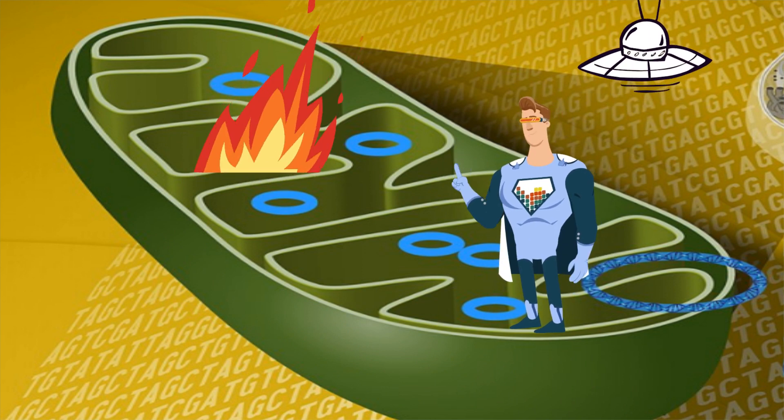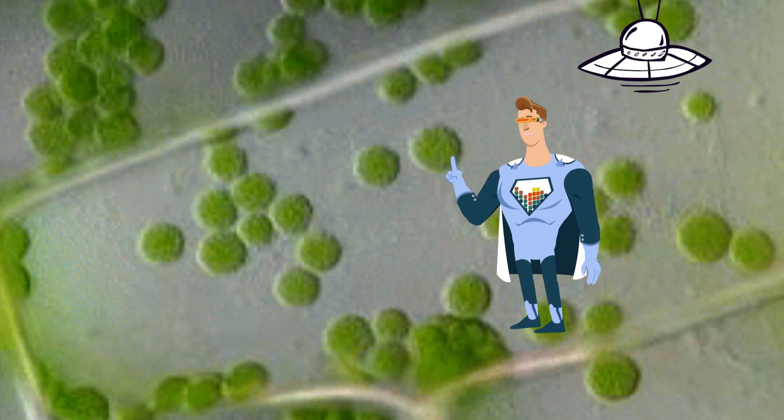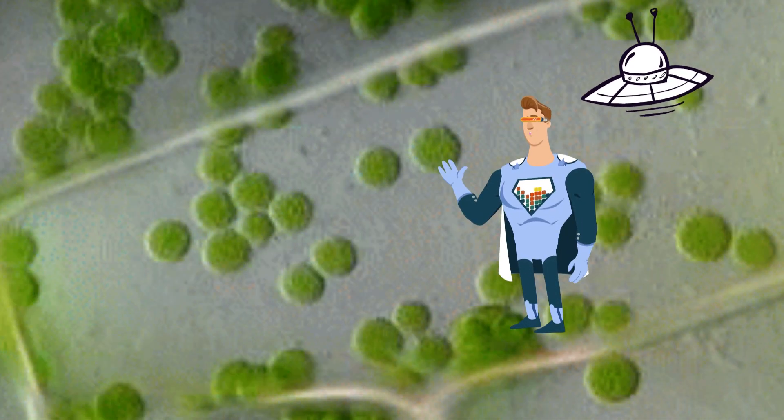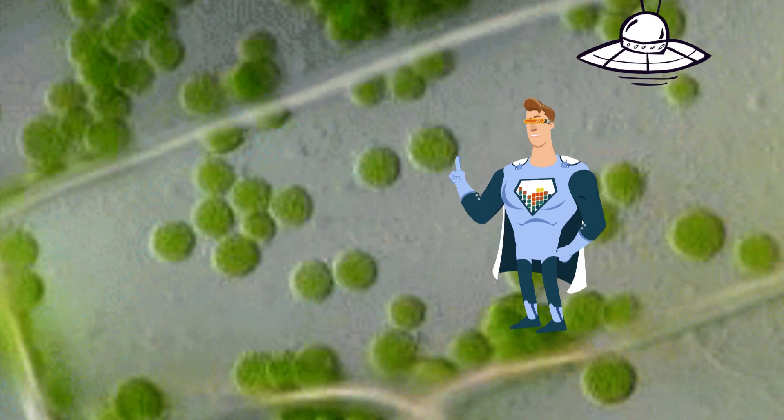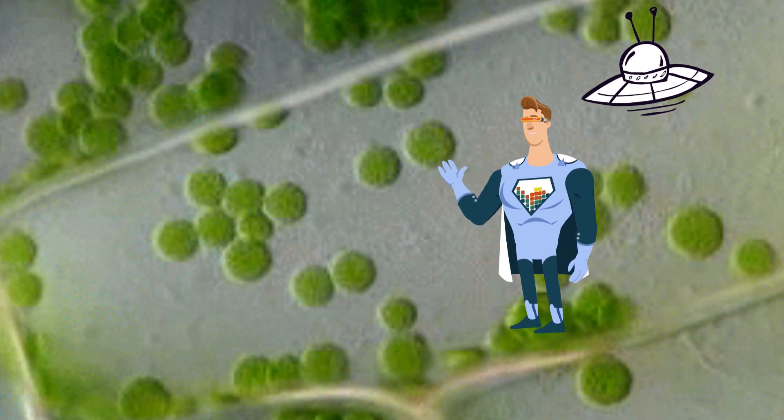Plants have these green organelles called chloroplasts which take sunlight and carbon dioxide and water and create sugar and oxygen.